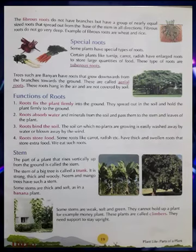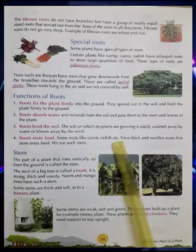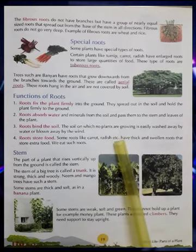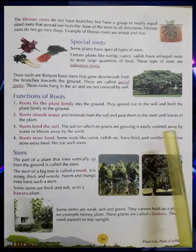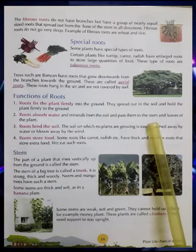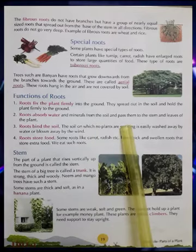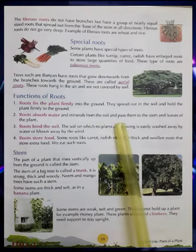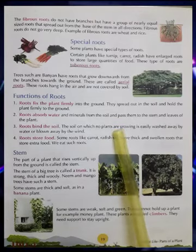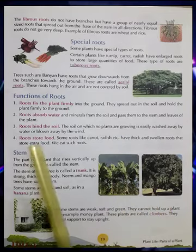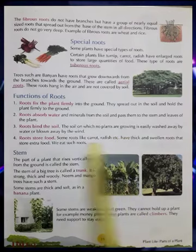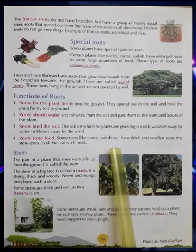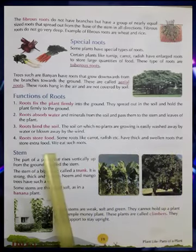Now, what are the functions of roots? Roots fix the plant firmly into the ground so the tree can stand straight — the plant doesn't fall easily. Roots absorb water and minerals from the soil and pass them to the stem and leaves of the plant. When you water the plant into the soil, the roots send all the water and minerals to all parts of the plant. Roots also bind the soil together so that the soil is not washed away when it rains or when you water the plants.